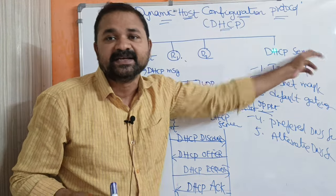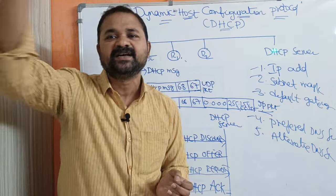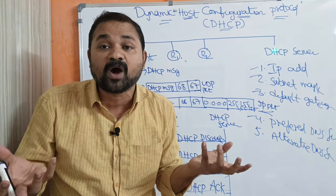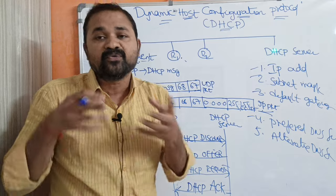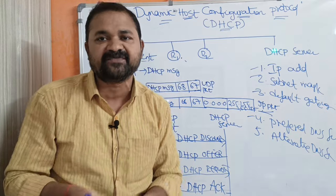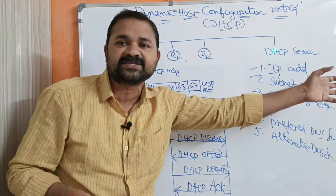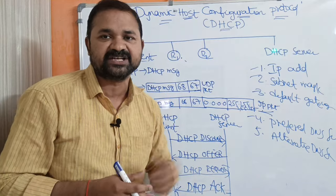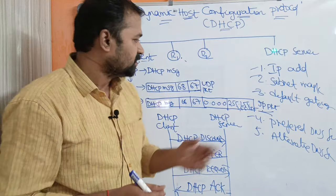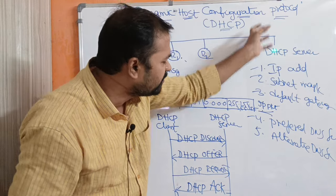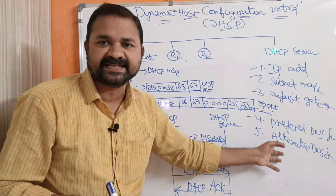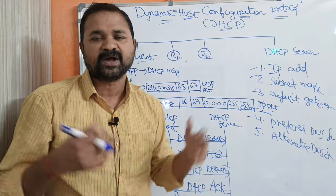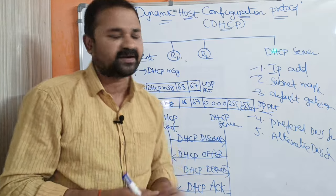The DHCP server contains a large pool of IP addresses. So it is the duty of the DHCP server to assign IP addresses to all 10,000 hosts in the organization. The DHCP server will provide all five details to 10,000 computers in the corresponding organization. Now let us see how that works.